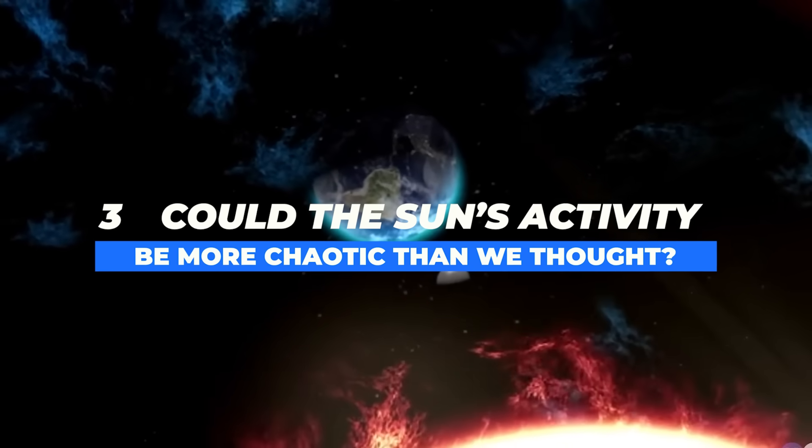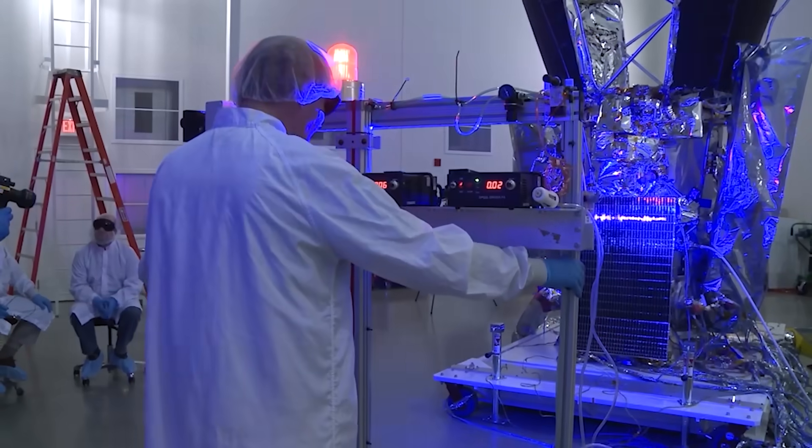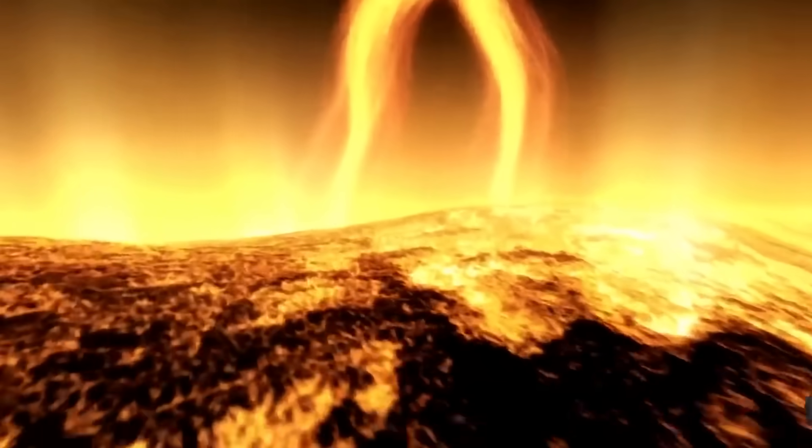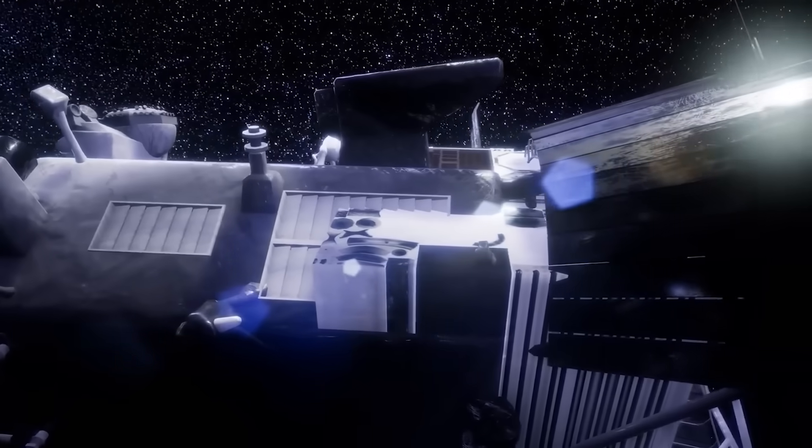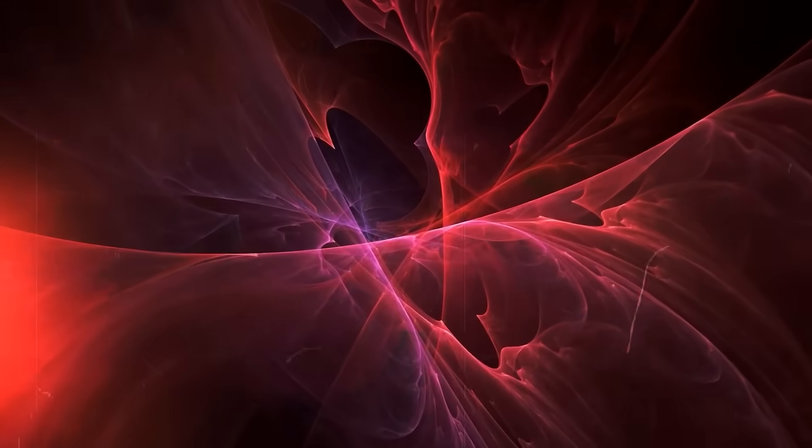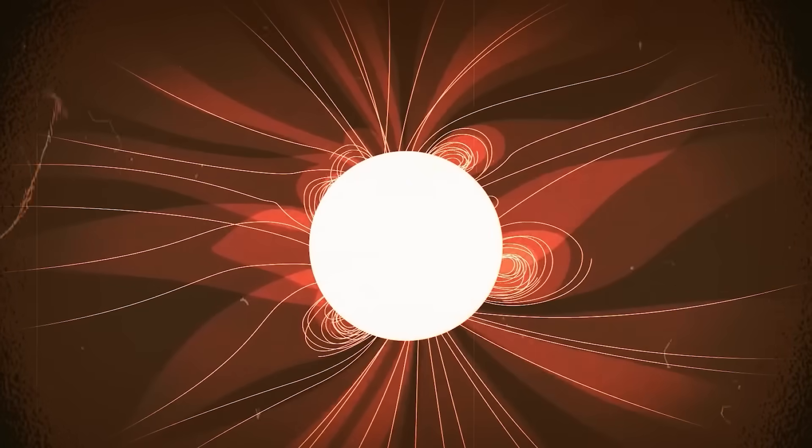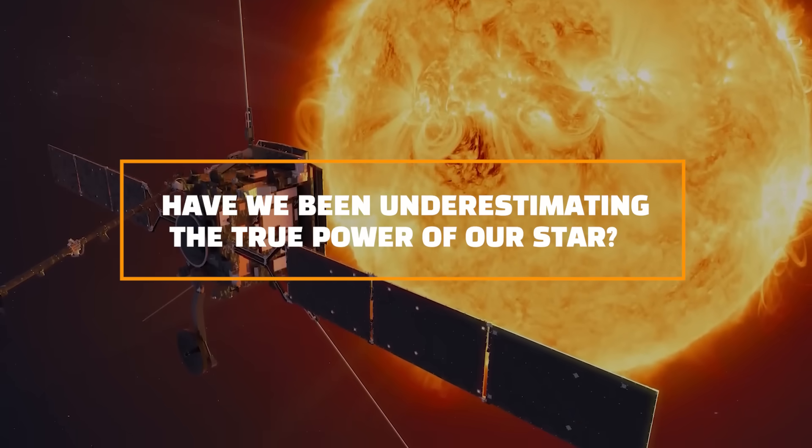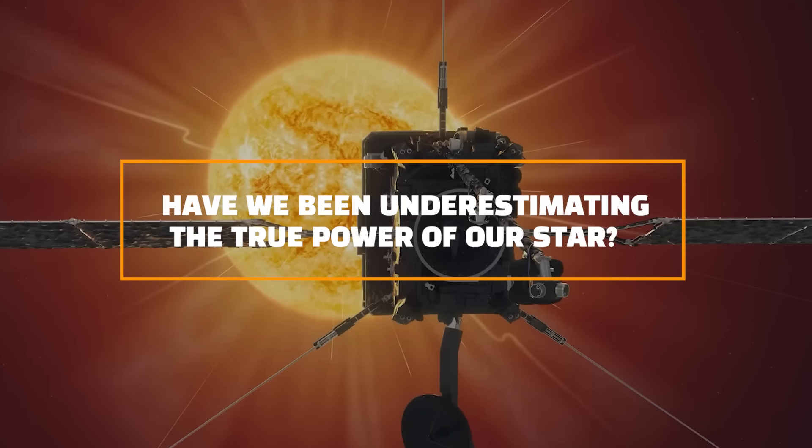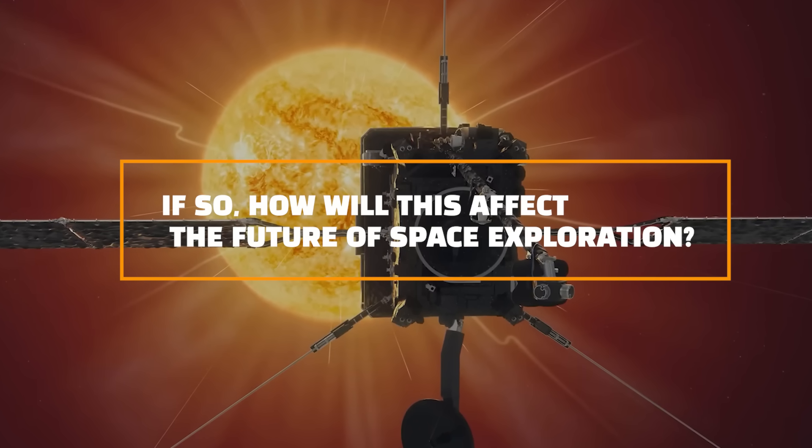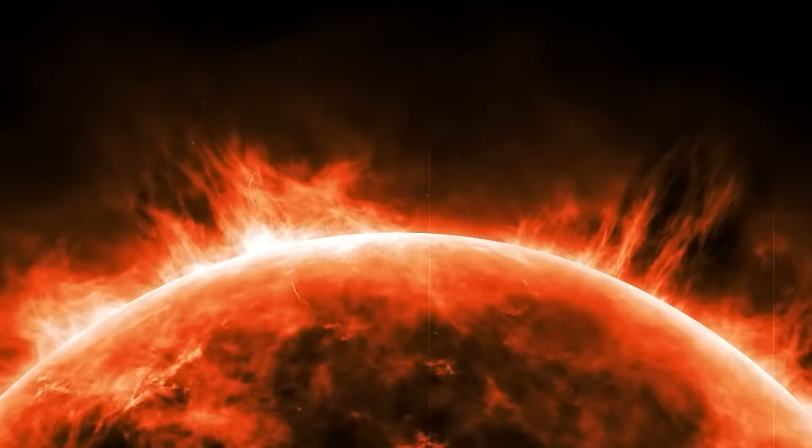Could the sun's activity be more chaotic than we thought? For decades, scientists have worked with models that suggest the sun follows relatively predictable cycles of activity. But the Parker Solar Probe's findings indicate that the sun's magnetic field may be far more dynamic and volatile than previously believed. If this is true, it raises a disturbing question. Have we been underestimating the true power of our star? If so, how will this affect the future of space exploration?